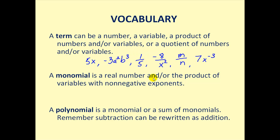A monomial is a real number and/or the product of variables with non-negative exponents. So some of these terms are monomials and some of them aren't. 5x, negative 3a²b³, and one fifth are the only terms that are also monomials.